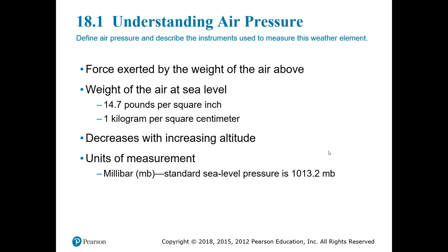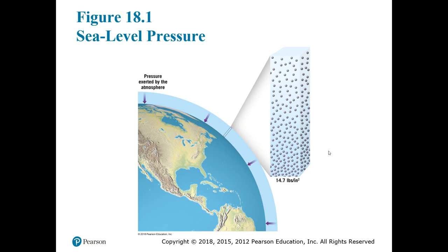One trend you need to know, which we covered in the intro section to the atmosphere, is that as we go up in the atmosphere — as we increase in altitude — pressure decreases. A useful unit of measurement for air pressure is the millibar, and that is what we see used on weather maps to show current air pressure across an area or region. The standard sea level pressure in millibars is 1013.2. Figure 18.1 shows that at the surface we have an air pressure of 14.7 pounds per square inch, due to the entire column of air from the surface all the way to the top of the atmosphere.